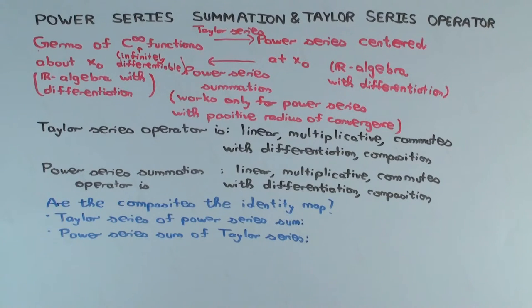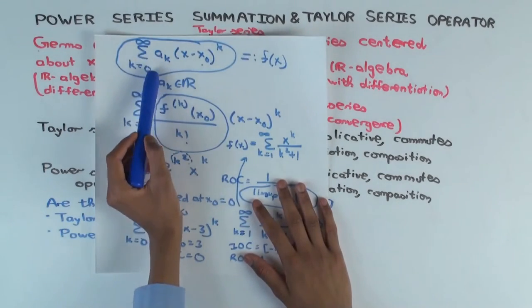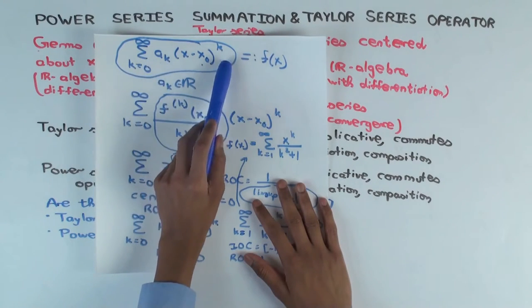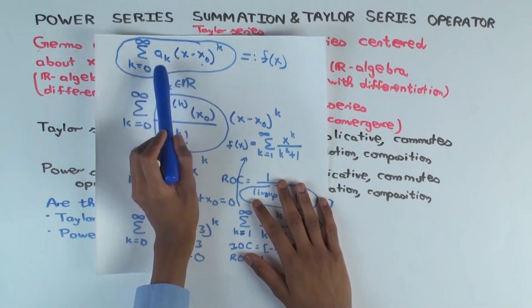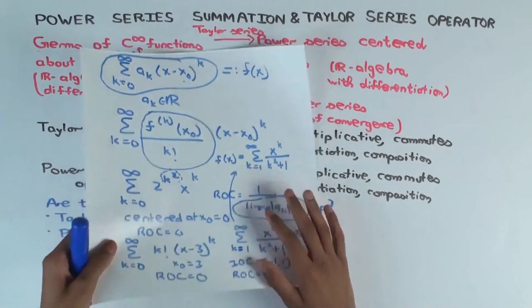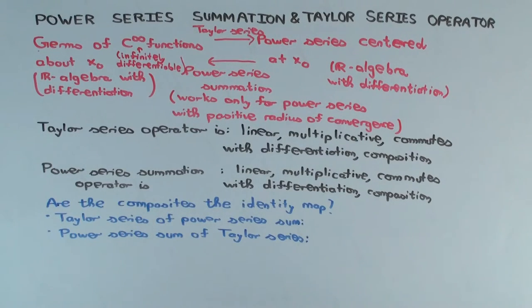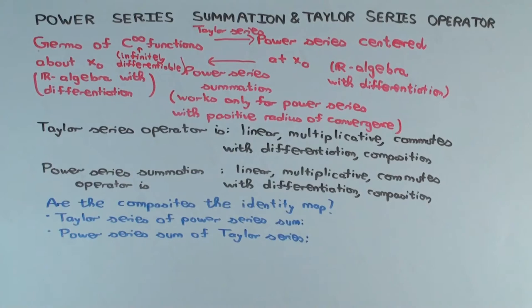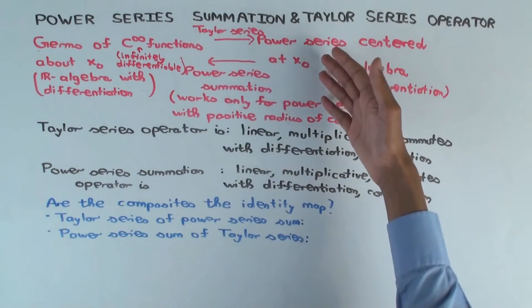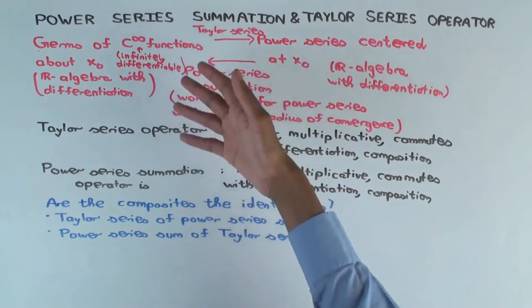The power series summation operator is also linear: adding two power series formally and then summing is the same as summing each and adding the results. It's multiplicative: multiplying formally and then summing equals summing each and multiplying the resulting functions. It commutes with differentiation: formally differentiating and then summing is the same as summing and then differentiating the function. And for composition, composing as power series and then summing equals summing and composing as functions, though you must be careful about the center changing.